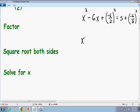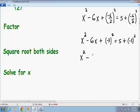We have x squared minus 6x plus negative 6 over 2 is just negative 3 squared equals 5 plus negative 6 over 2 is negative 3 squared. I'm going to simplify this even further. We have x squared minus 6x, negative 3 squared